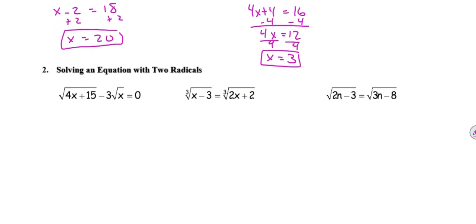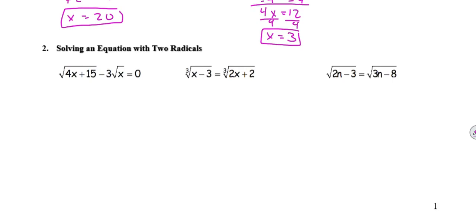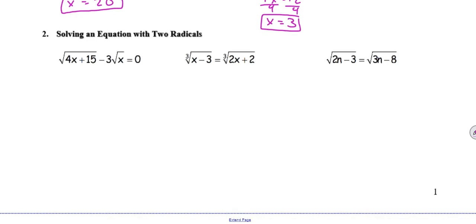Moving on along, we're now going to look at solving an equation with two radicals. Sometimes they're on the same side, sometimes they're on opposite sides. The main thing here to remember is that we actually want them on different sides of the equation. So if I have two radicals on the same side, I'm going to move one to the other side by addition or subtraction. So I end up with √(4x+15) equal to 3√x.